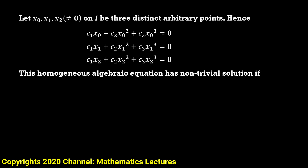So the condition for a non-trivial solution is that the determinant of the coefficient matrix — with rows [x₀, x₀², x₀³], [x₁, x₁², x₁³], and [x₂, x₂², x₂³] — must equal zero. If this determinant equals zero, we get a non-trivial solution, meaning c1, c2, and c3 are not all zero. That would contradict the definition of linearly independent functions.